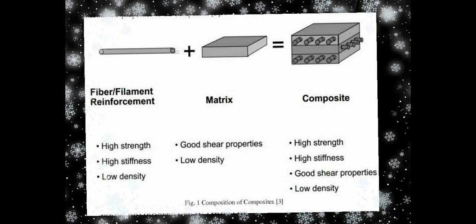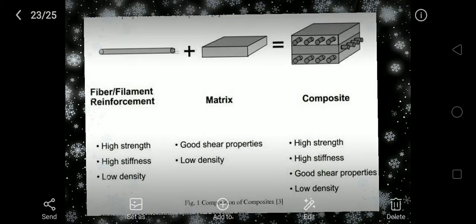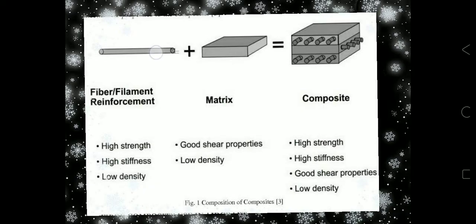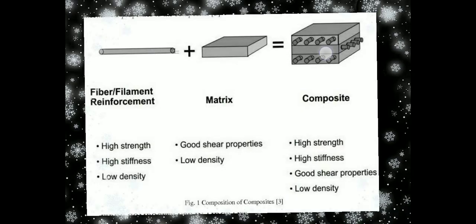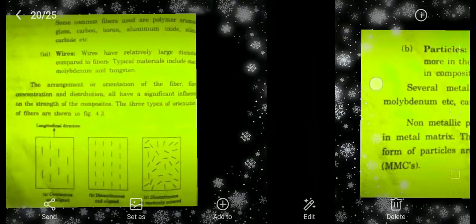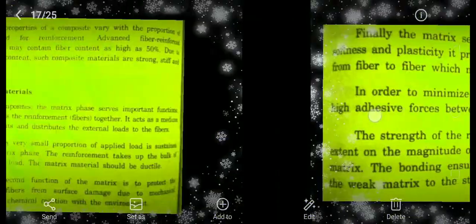As a basic example, imagine you have a small fabric in which you keep some small fiber-like material, and the final result is the composite. That is how the matrix and fiber work together to form the composite material.